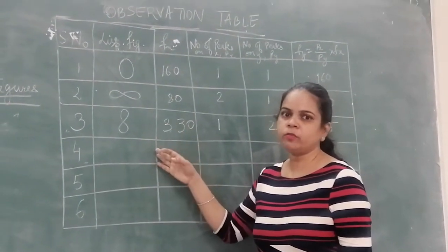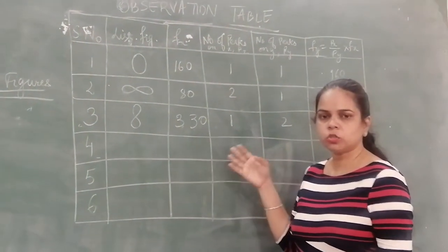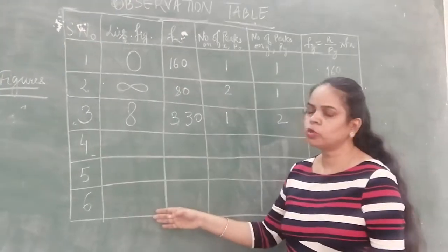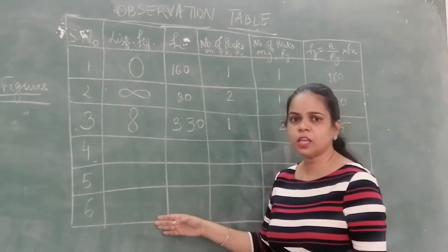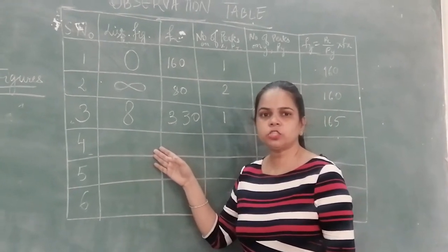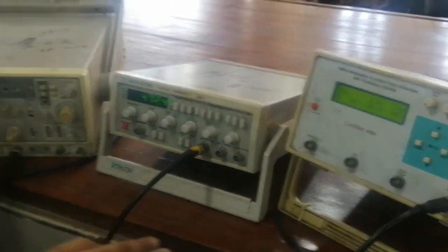We can get horizontal or vertical patterns depending upon the ratio, whether it's 2:1, 1:2, 3:1, 1:3 and so on. This is what we have to observe in the CRO, the Lissajous patterns. So next, let's switch to the experimental apparatus. This is our experimental apparatus.